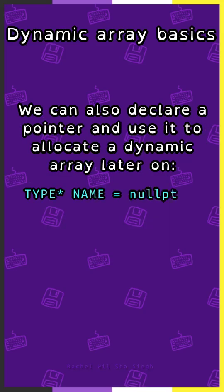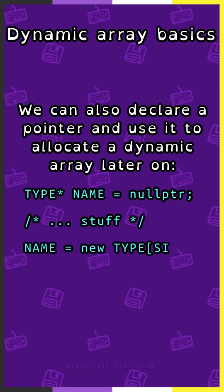We can also declare a pointer and use it to allocate a dynamic array later on. So we could say: datatype, asterisk, pointer name, equals null pointer, and then later in the program have: pointer name, equals new, datatype, square brackets, size.